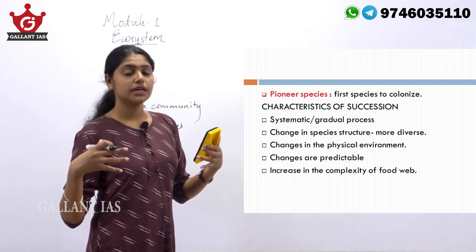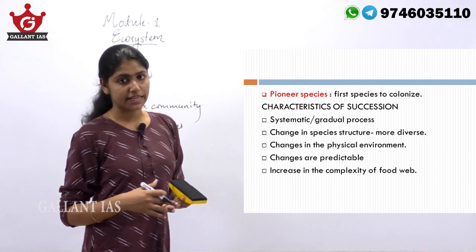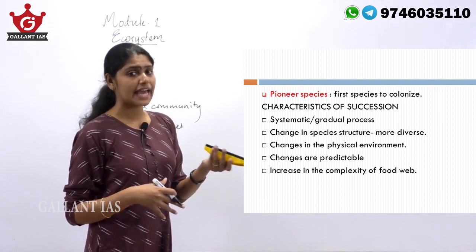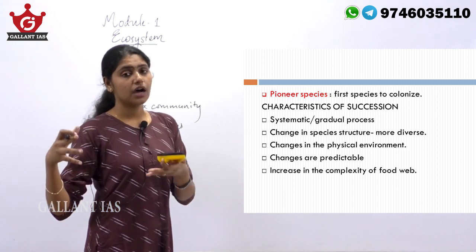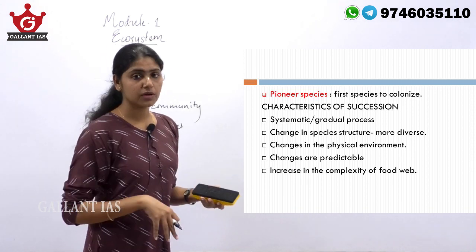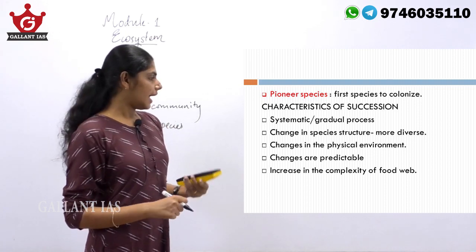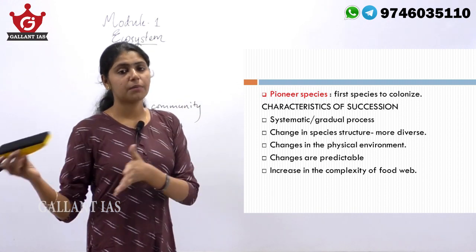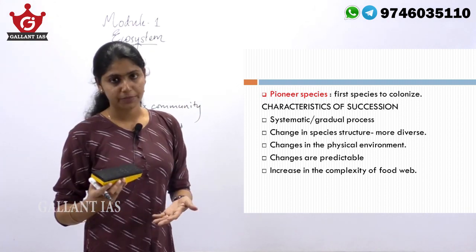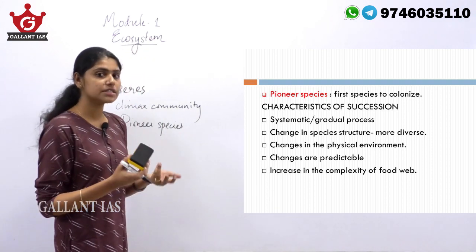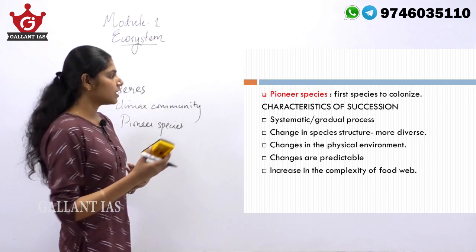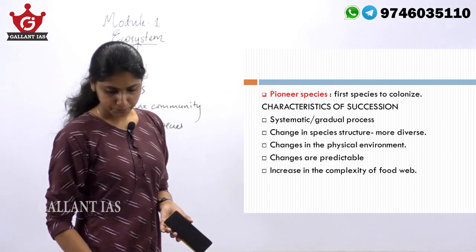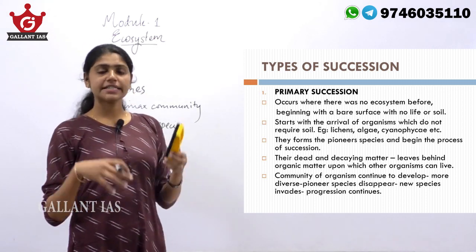During succession, organisms become more diverse in nature, there are changes in the physical environment, and the changes can be predictable based on the organisms undergoing succession. As succession progresses, it amounts to an increase in complexity in the food web, since as the community becomes more diverse, the food web also becomes more complex.